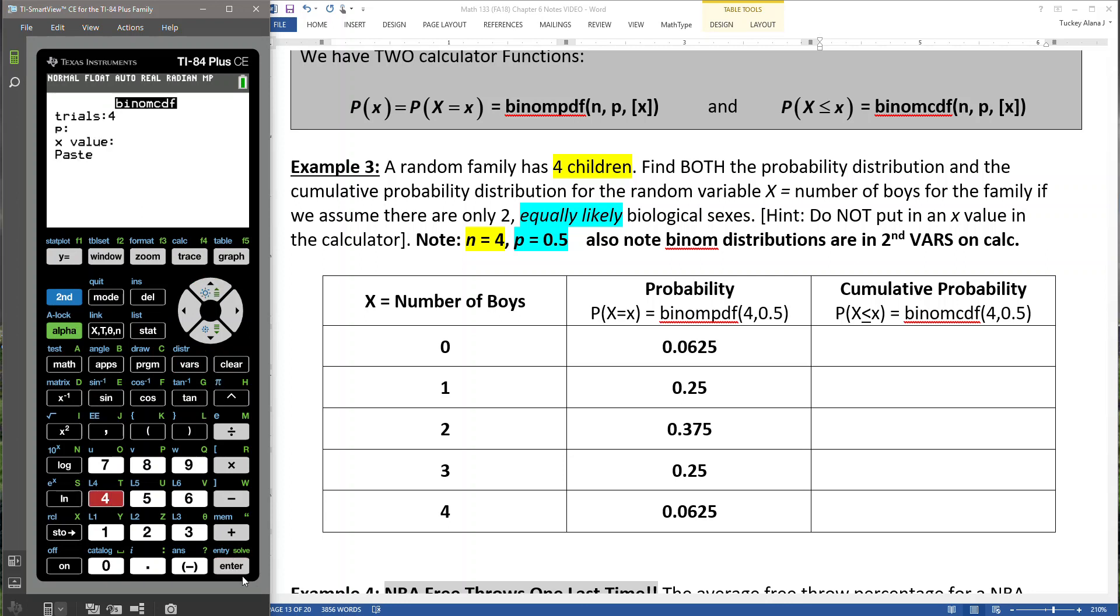I'm going to take 4 as my N. I'm going to take 0.5 as my probability of success. I'm going to leave the X value blank because I can because there's that bracket in there which the TI company puts in there to let us know we can put it in or we cannot put it in. It's your choice. So we're not going to put it in. We're going to leave X value blank.